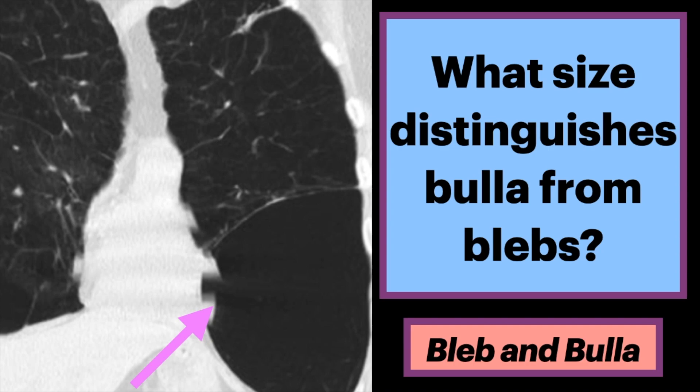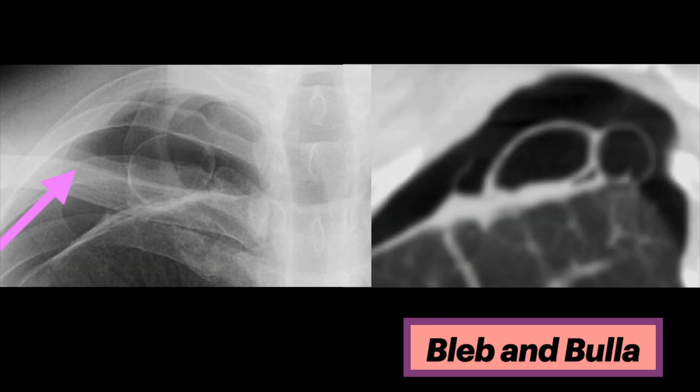What size distinguishes bullae from blebs? These images, including a frontal chest radiograph on the left and coronal chest CT on the right of a patient with a right spontaneous pneumothorax, show right apical bullae or blebs, typically found on imaging of affected patients.